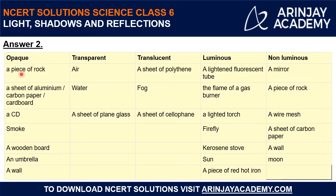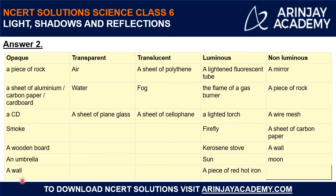For the opaque category: a piece of rock — rock doesn't allow light to pass through it. Then a sheet of aluminium, a sheet of carbon paper, and a sheet of cardboard — all do not allow light to pass. Then a CD (compact disc), smoke, a wooden board, an umbrella, and a wall. All these objects are opaque.